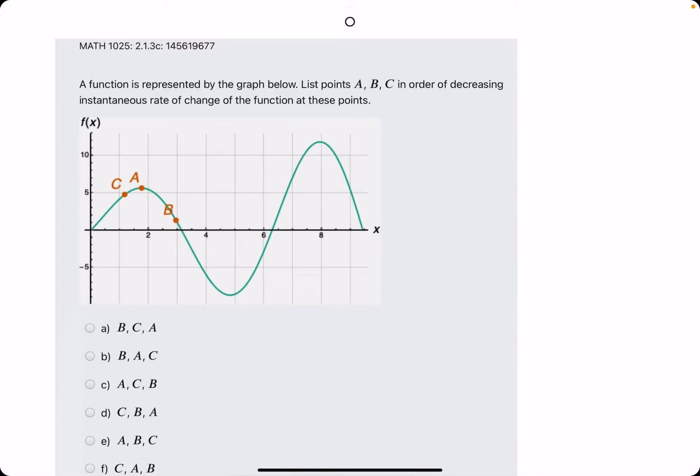In this problem, they give us a function on a graph with three points A, B, and C, and they tell us to list A, B, and C in order of decreasing instantaneous rate of change.